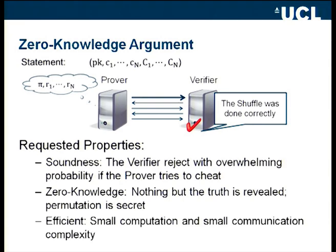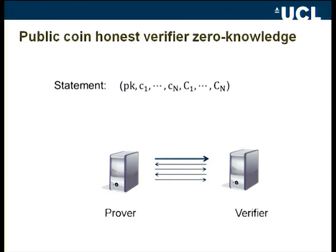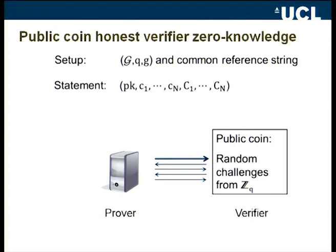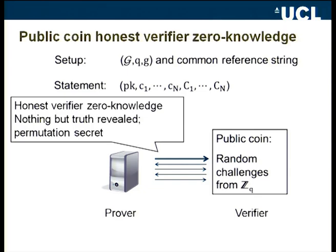Since we are looking at real-life applications, the argument should be efficient with small communication and small computation costs. In e-voting, we want results as soon as possible after polling stations close. More precisely, both prover and verifier know the group setup for El-Gamal encryption and a common reference string. The verifier picks challenges uniformly at random from Z_q, so we are in the public-coin setting, and we are constructing an honest-verifier zero-knowledge argument.